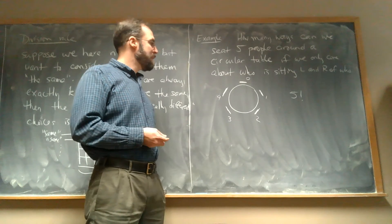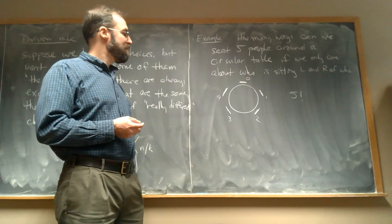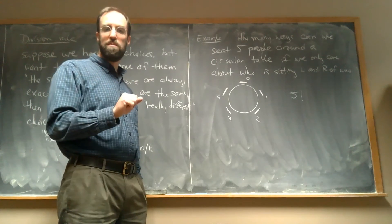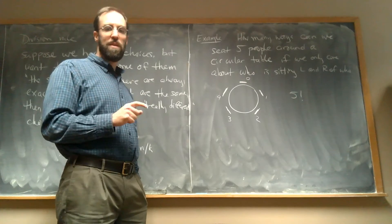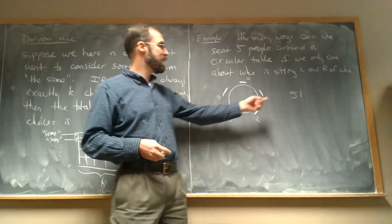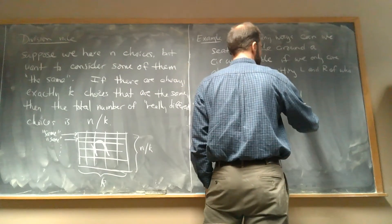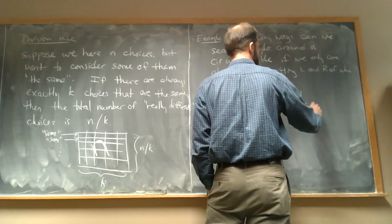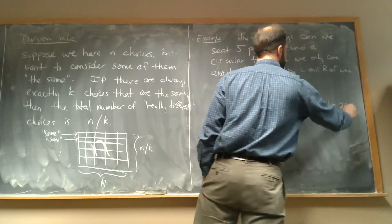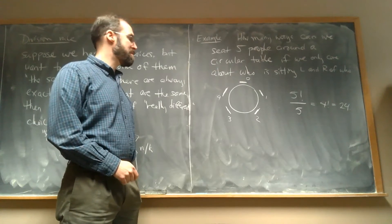We can apply the division rule and say I've always got five different rotations that are all the same, and I want to consider them all as really just being one choice. So I need to take five factorial and divide it by five, which is four factorial, or 24 ways of seating that are different.